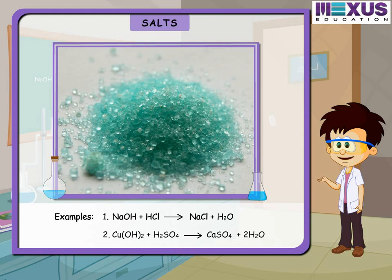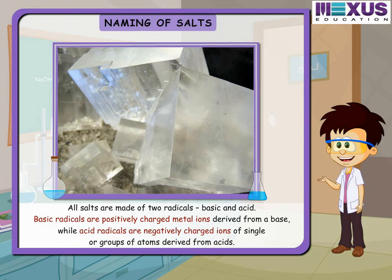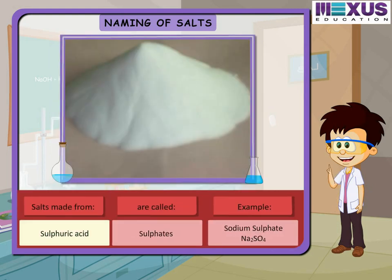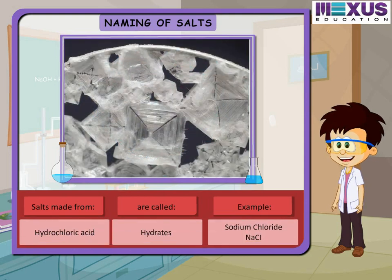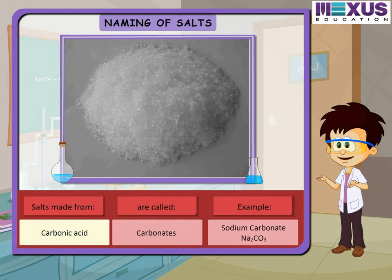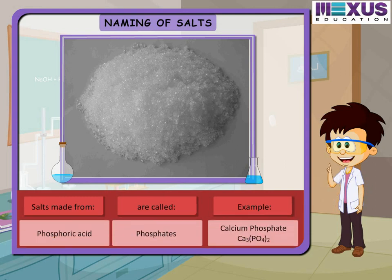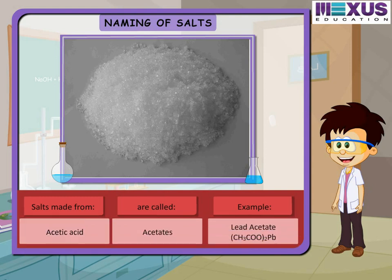All salts are made of two radicals: basic and acid. Basic radicals are positively charged metal ions derived from a base, while acid radicals are negatively charged ions of single or group of atoms derived from acids. Salts made from sulfuric acid are called sulfates, those from nitric acid are called nitrates, from hydrochloric acid are called chlorides, from carbonic acid are called carbonates, from phosphoric acid are called phosphates, and from acetic acid are called acetates.